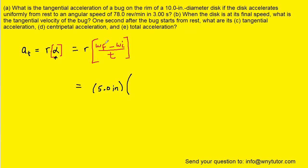We have the final angular velocity given as 78 revolutions per minute — also a non-standard unit, so we'll have to convert that into the standard unit of radians per second. That's omega f. Omega initial is the initial angular velocity, but the disk starts from rest, so the initial angular velocity is 0 radians per second. Then we'll divide by the time given as 3 seconds.